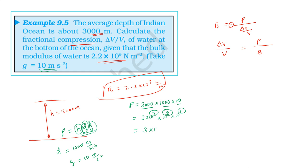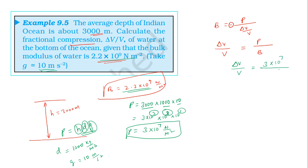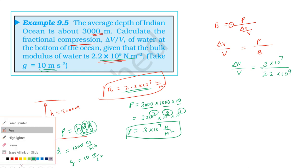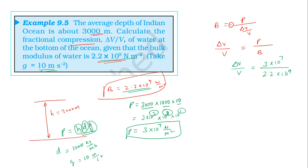The pressure at the bottom comes out to 3 into 10 power 7 newton per meter square. Substituting into the bulk modulus formula: delta V by V equals 3 into 10 power 7 divided by 2.2 into 10 power 9 newton per meter square, which gives 3 by 2.2 into 10 power 9 minus 7.